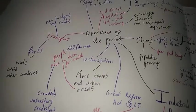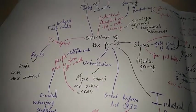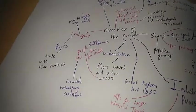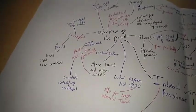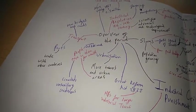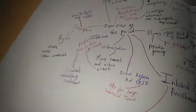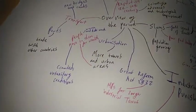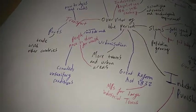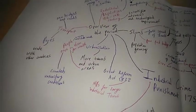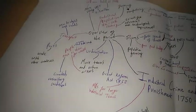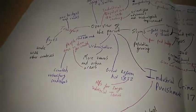So next urbanisation. There were more towns and urban areas which means people moved to them for wealth. Although that wasn't true, as there were crowded unsanitary conditions and women and kids had to work.